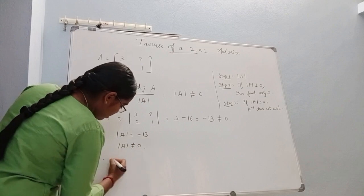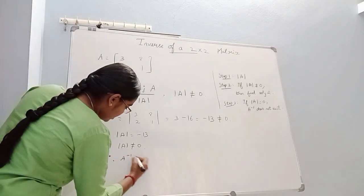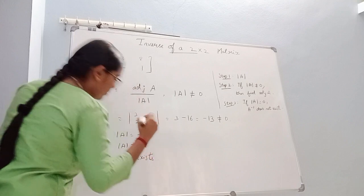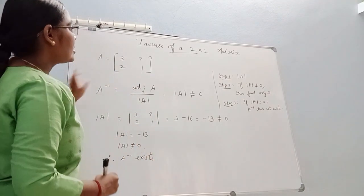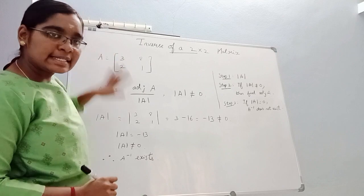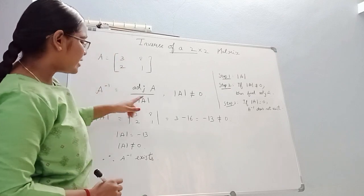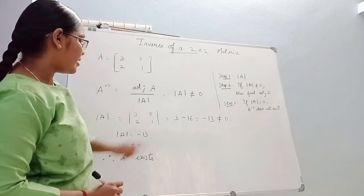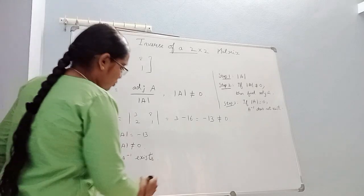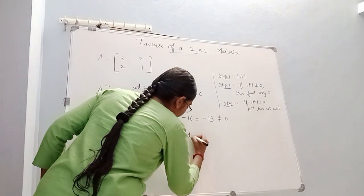Therefore, A inverse exists. Now we confirm — the inverse of the matrix exists. So we will find the determinant. Next step: find the adjoint.